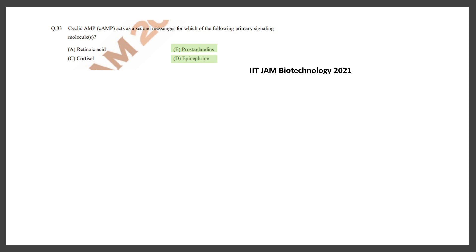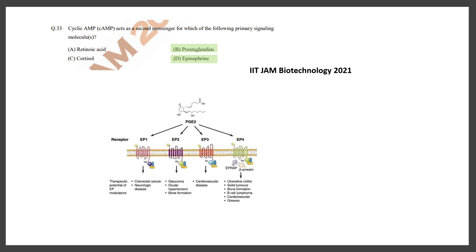Epinephrine acts via the beta-adrenergic receptor and that leads to cyclic AMP generation. Prostaglandin people would often miss — it is derived from arachidonic acid but still utilizes a G protein-coupled receptor for its signaling, leading to cyclic AMP generation. Retinoic acid and cortisol are incorrect because both use an intracellular receptor, not a GPCR system, and they don't activate adenylate cyclase.